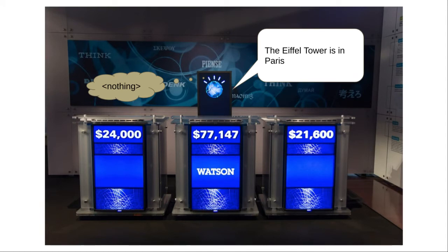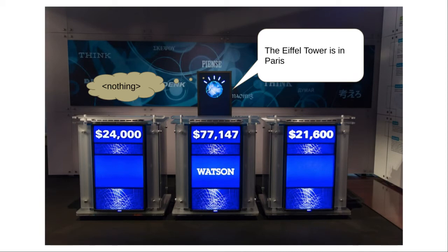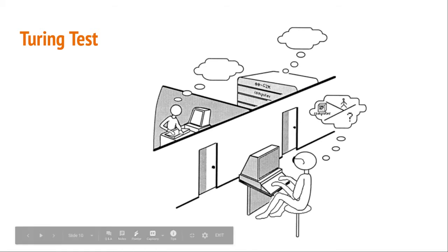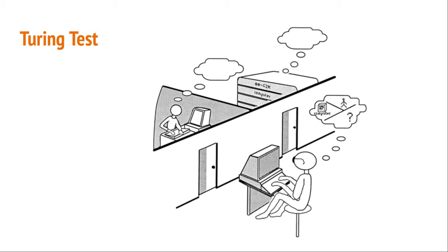Some people have argued that the Chinese room experiment is not a good argument, because even if the person in the room doesn't understand Chinese, you could argue that the room as a whole does understand Chinese. The entire system is not just the person — it's also the book of instructions and the bits of paper. The whole room is the system, and that system does understand Chinese, because it's able to answer questions and is indistinguishable from someone who actually does understand Chinese. And as we saw in the Turing test, if the thing on the other end acts exactly the same as a real person, how would you ever know whether they really understood what you were saying?